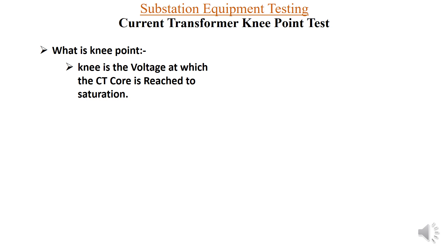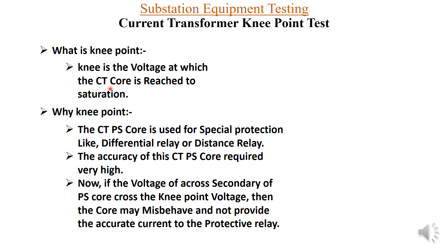Let us understand what is a knee point. The knee point is the voltage at which the CT core will start to saturate. Beyond this knee point voltage, the CT core will start to saturate. That point at which it starts to saturate is called the knee point.